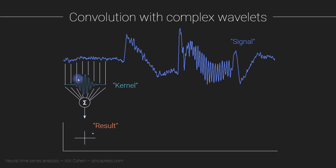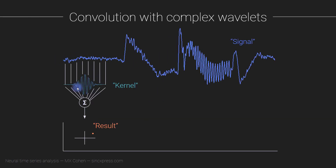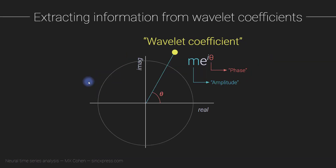We get a complex result from the dot product, giving us an entire time series of complex-valued numbers. The result of convolution is a complex time series. At each time point, this complex dot product is called a wavelet coefficient — just like how in the Fourier transform we called them Fourier coefficients. When we represent the wavelet coefficient as a complex number using Euler's formula, we can extract the distance away from the origin — the length of this line — which we call the amplitude. The angle with respect to the positive real axis is called the phase. This is exactly how we get the amplitude time series and the phase angle time series from wavelet convolution.